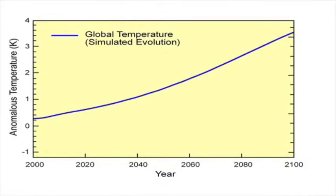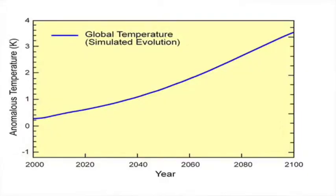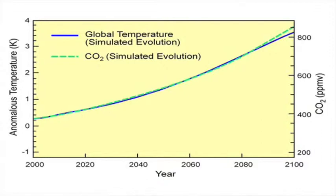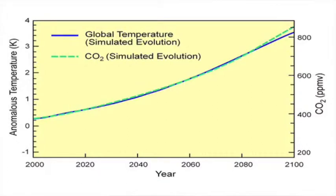The only feature common to the models retained in their mean is a centennial drift — it increases monotonically, becoming 3.5 Kelvin warmer by the end of the 21st century. The increase of global temperature should correspond to increasing CO₂; in fact, their correspondence is considerably greater. In green is the forecast evolution of CO₂ — it too increases, exceeding 800 ppmv by the end of the century. Global temperature doesn't just increase with increasing CO₂ — it tracks it almost perfectly. In the model world, changes of global temperature and CO₂ are isomorphic; they have exactly the same form.